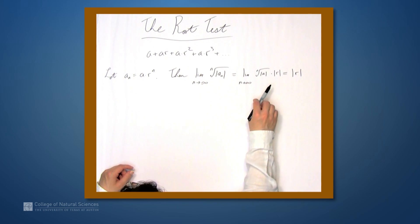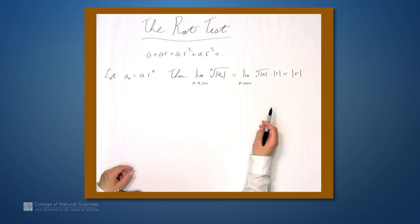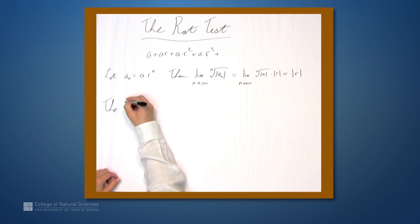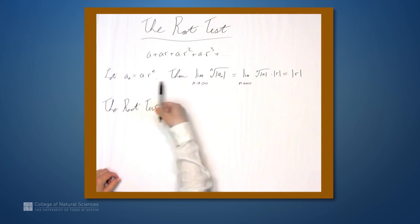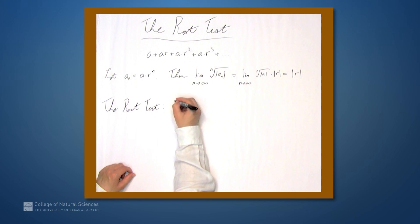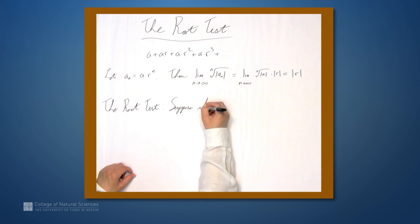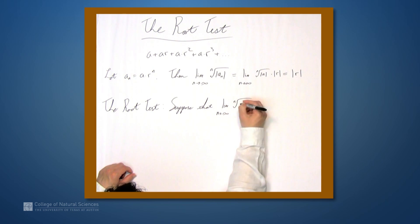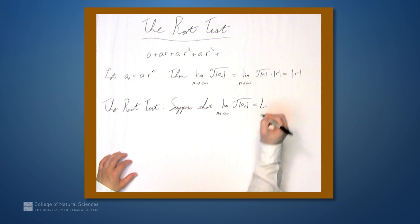We already know that the absolute value of r is all we need to determine whether the series converges. If this is less than 1, it converges; if it's greater than or equal to 1, it diverges. This is actually justification for the root test. So the root test: suppose the limit as n approaches infinity of the nth root of the absolute value of a_n equals l.